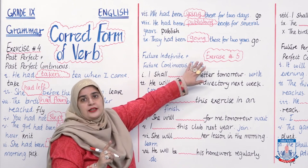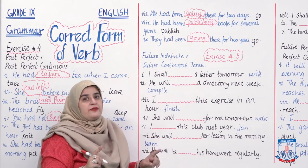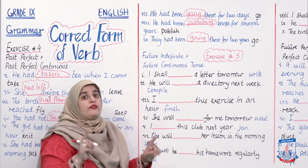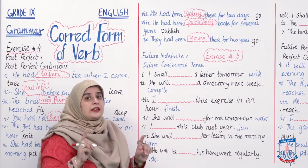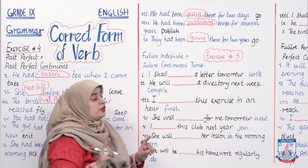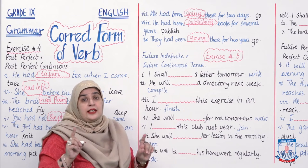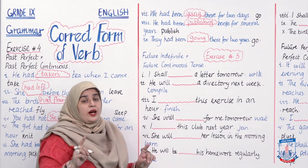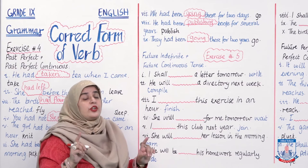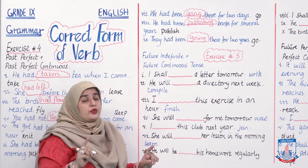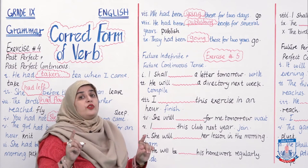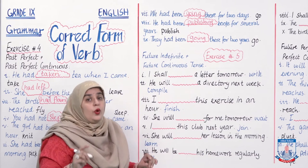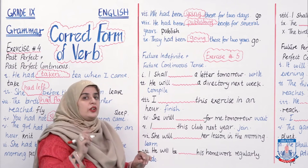We now move on to Exercise 5. Exercise 5 has sentences related to future indefinite and future continuous tense. Let's fill in the correct form of verb — simple future, ya future continuous, yaani ke verb ke end mein ING laga ho — uske related.